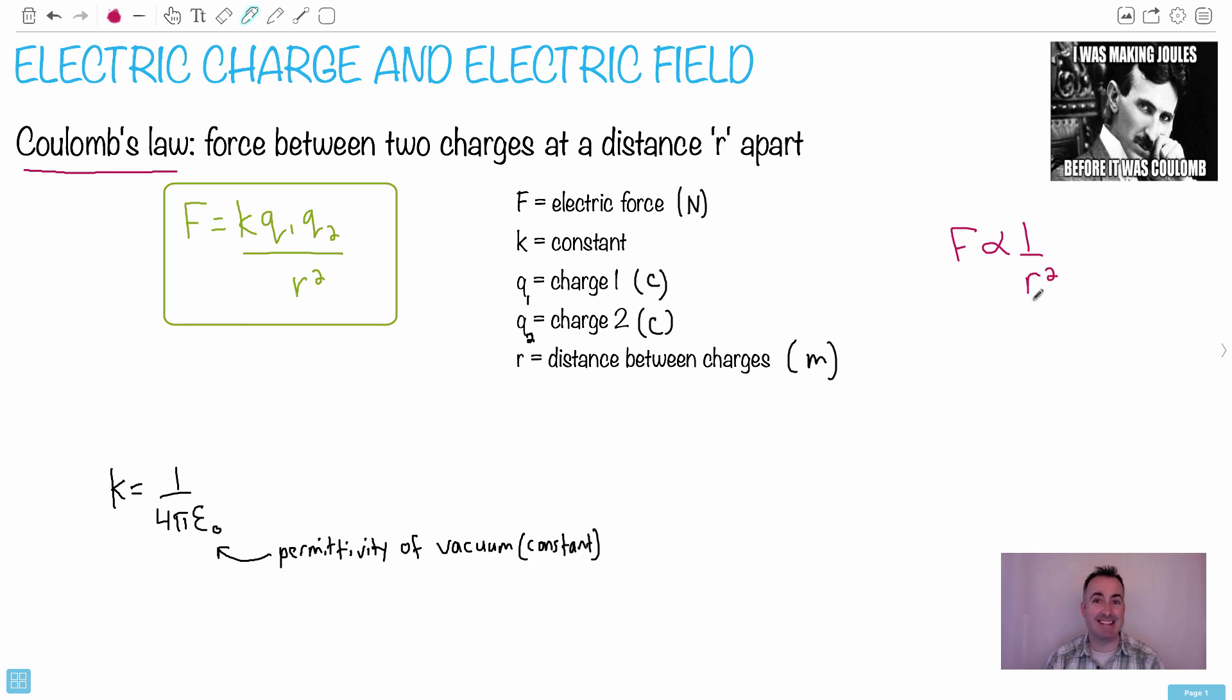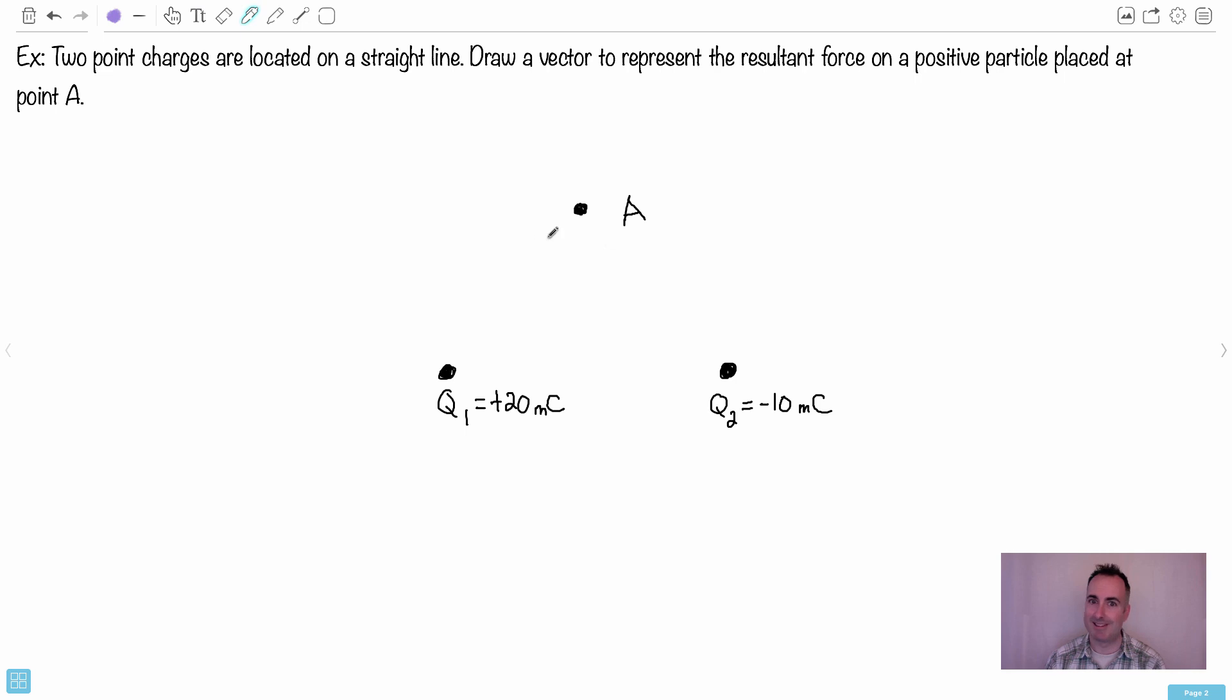So what that means is as the distance, let's say, doubles, let's just say these two charges then were double the distance apart, then 2 squared is 4. So that means the force will actually go down by 4. And they love to ask these kind of questions on IB exams. That's why it's really important. And by the way, you can also say that this K here can also be written here as 1 over 4 pi epsilon 0, where epsilon is just the permittivity of a vacuum. You can just look that up.